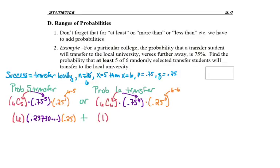When you find the combination of six choose six, you get one. There's only one way to pick six people from a group of six when order doesn't matter with combinations. 0.75 to the sixth power is a long number, and don't forget, 0.25 to the zero is one—anything to the zero power is just one.